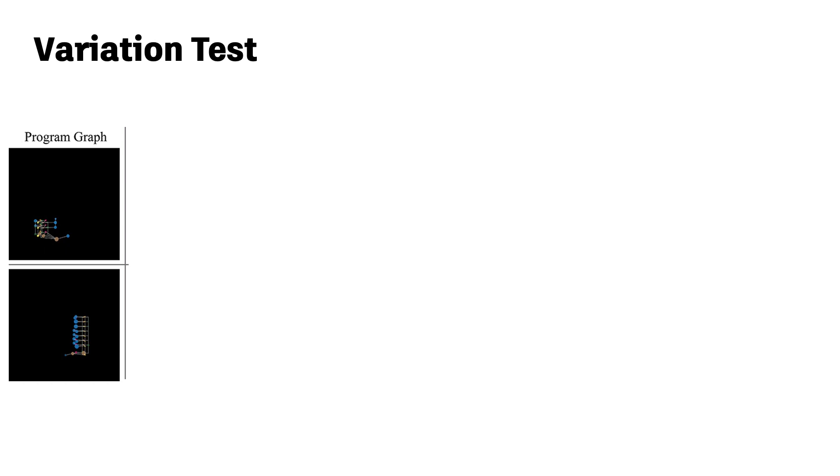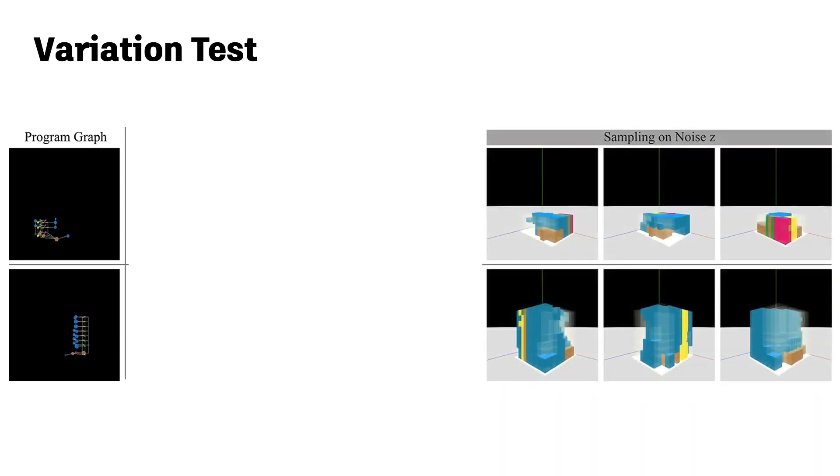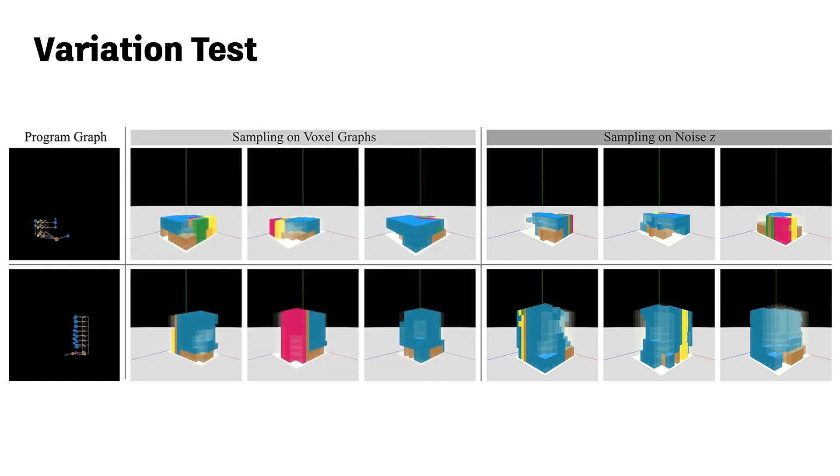To generate variations given the same program graph, Building GAN can either sample from the noise vector z or use different voxel graphs by changing the space partitioning.